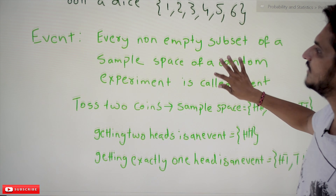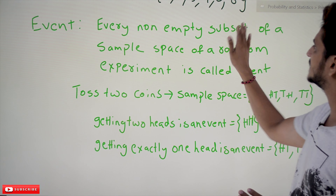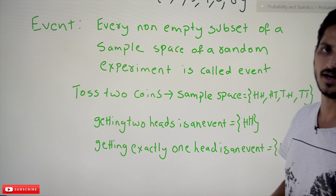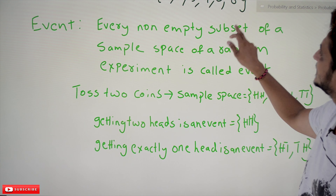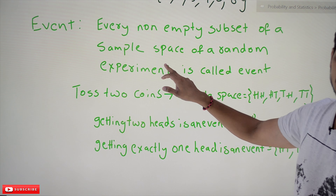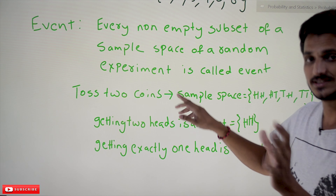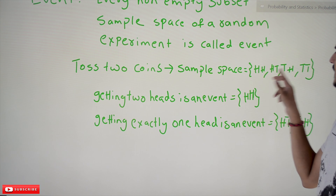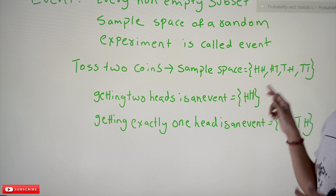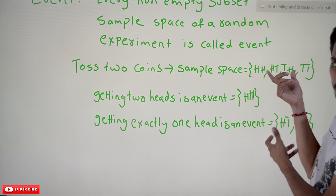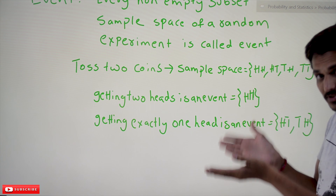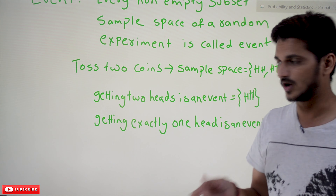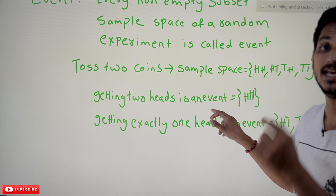Now coming to the next definition — event. Every non-empty subset of a sample space of a random experiment is called an event. With an example we will understand better. Toss two coins — what is the sample space? It may show up head-head, head-tail, tail-head, or tail-tail. Every non-empty subset of this sample space we call an event. For example, when you toss two coins, showing two heads is an event. How many possibilities are there for showing two heads? One possibility — head-head.